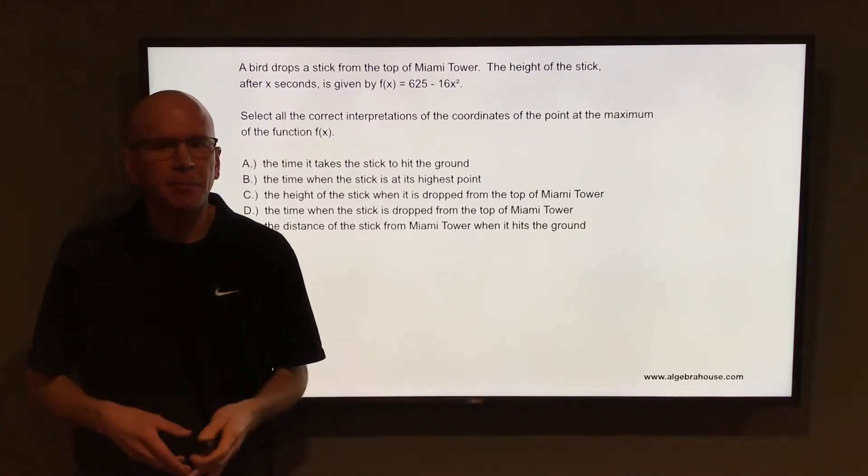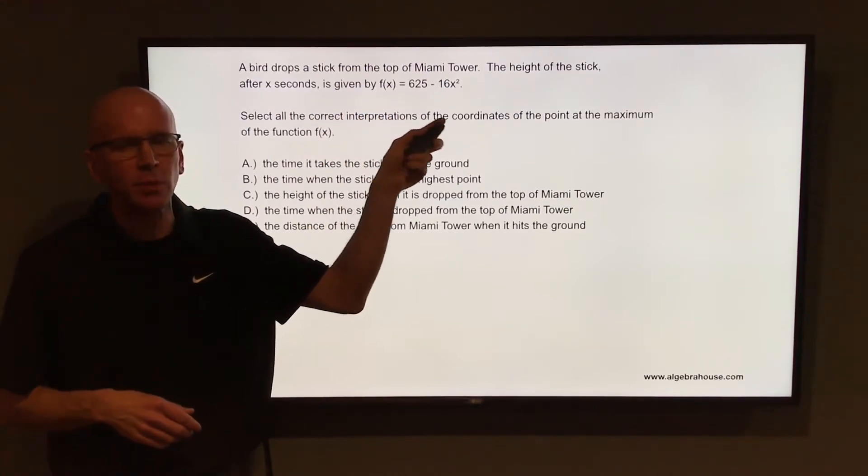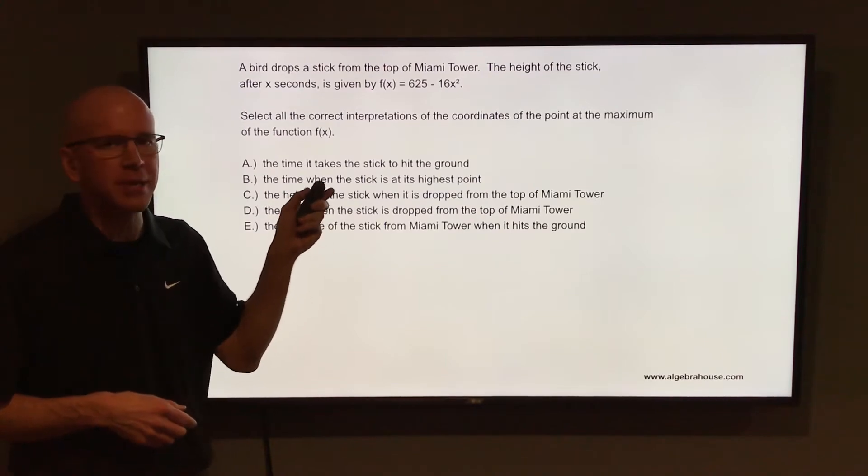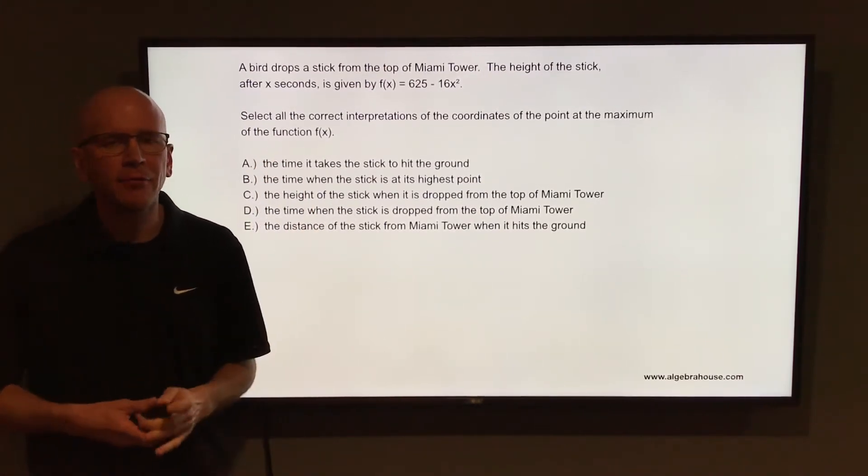A bird drops a stick from the top of Miami Tower. The height of the stick after x seconds is given by f(x) equals 625 minus 16x squared. Select all the correct interpretations of the coordinates of the point at the maximum of the function f(x).